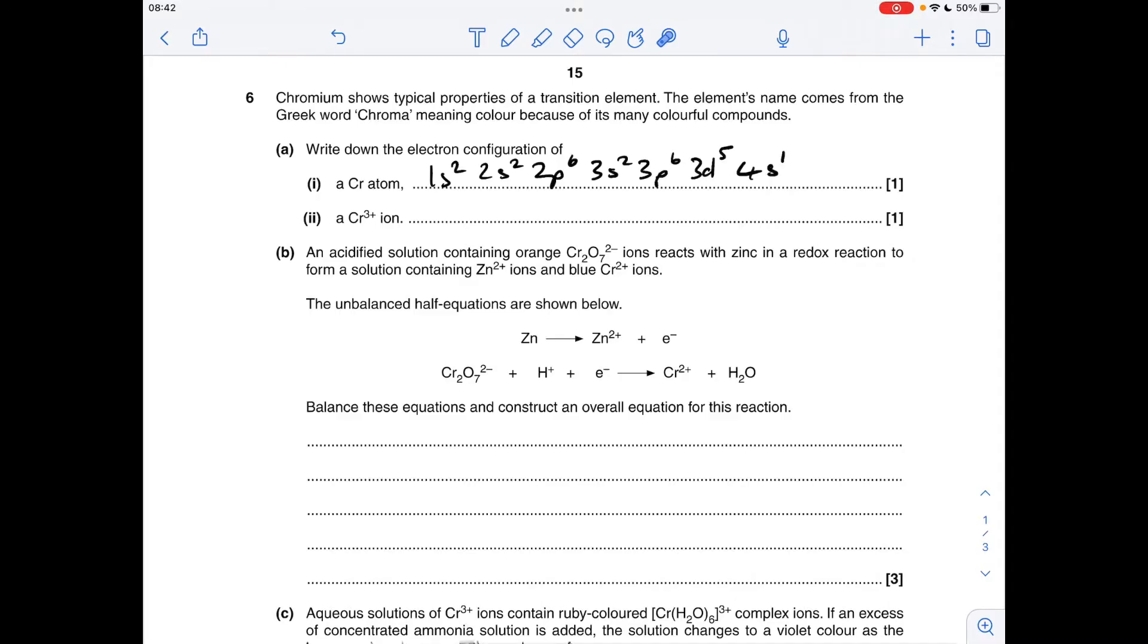So Cr³⁺ ion, we need to lose the 4S electrons first, that's why I write them at the end. So we're going to lose that and two of these, which gives us that.